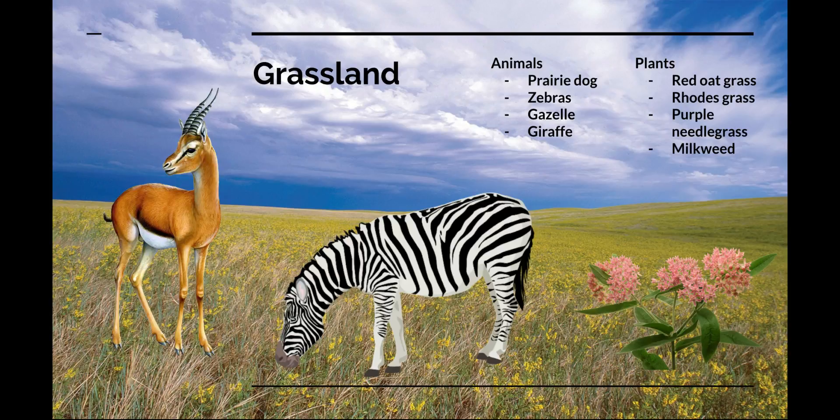For example, in Africa, grasslands are called savannas. The dominant animals in grasslands are plant eaters, like horses and deer. Their long legs help them run fast to escape grassland predators.